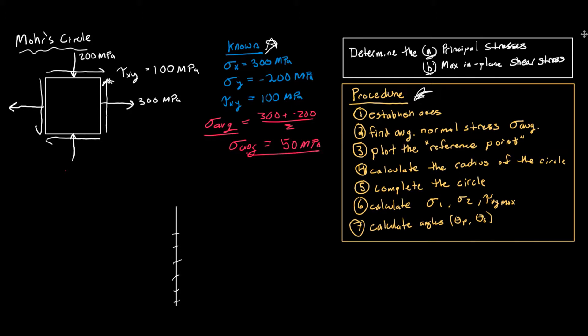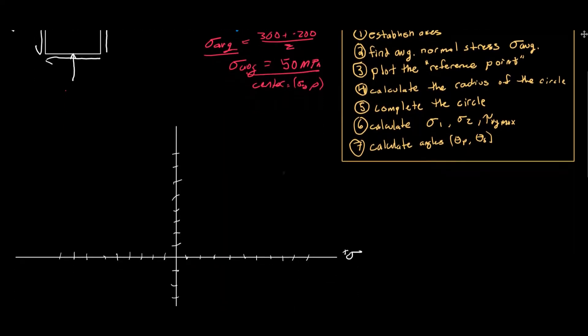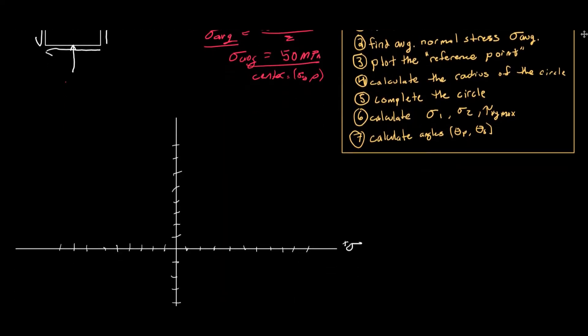That means the center of our circle is going to be at (σ_average, 0), so it's going to be at (50, 0). If we go down here, let's say each tick mark is 50, the center of the circle is going to be at positive 50 comma zero, because it's going to be on the x-axis — no y component.